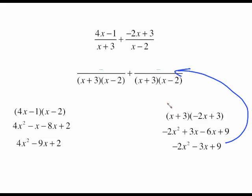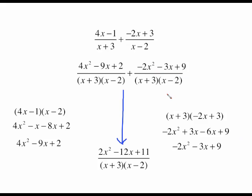So here's the slide that shows those numerators put in the correct place. All we have to do now is combine like terms. 4x squared minus 2x squared is 2x squared. Negative 9x and a negative 3x is a negative 12x. 2 plus 9 is 11. And this thing does not factor out.